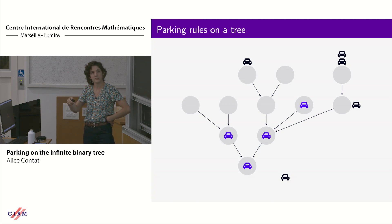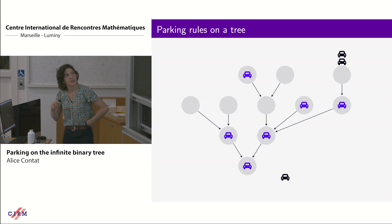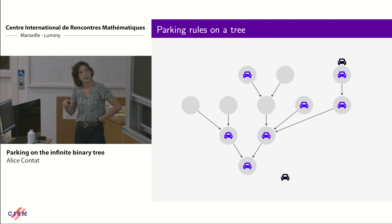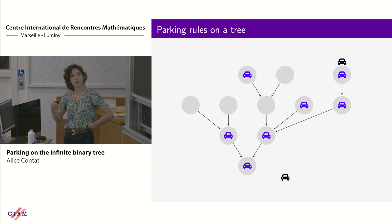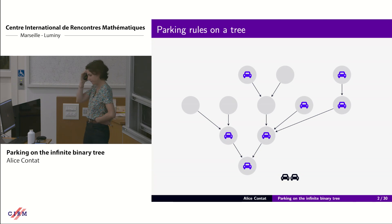Then the next car parks on its arriving vertex, same for the car at the top. Here the first car parks at its arriving vertex, and the second follows the edges, cannot find a free spot, and exits the tree.